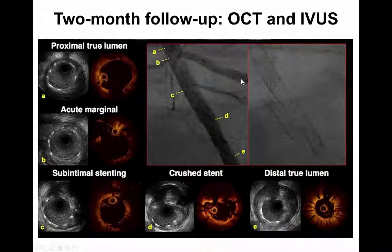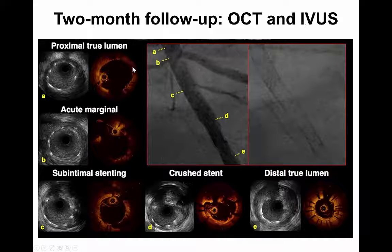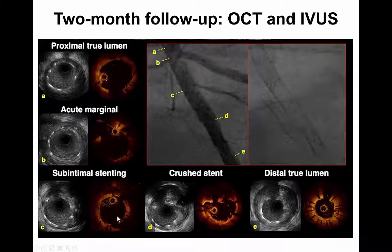This is the side-by-side comparison between OCT and IVUS showing the optimal result at two months with subintimal stenting, the crashed stent, and the stent in the distal true lumen.